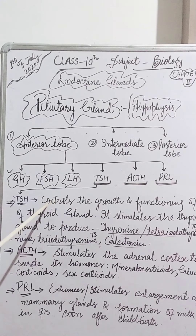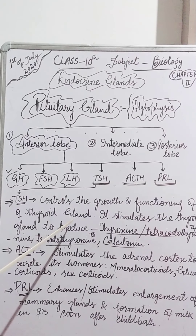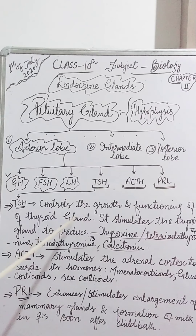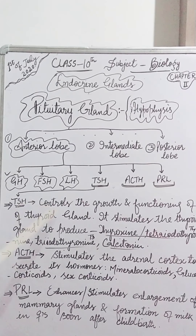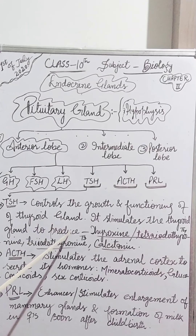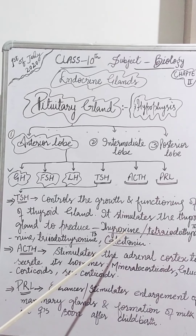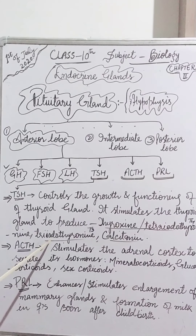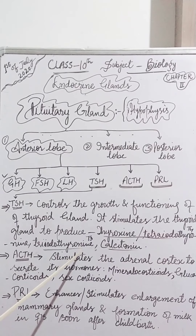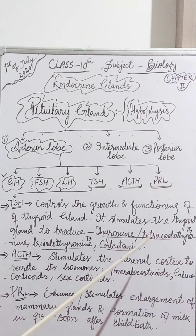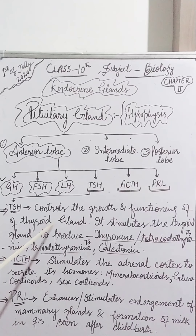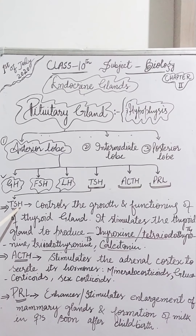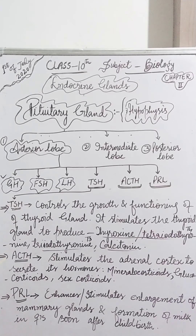TSH controls the growth and functioning of the thyroid gland, which is a very important gland. Thyroid stimulating hormone stimulates the thyroid gland to produce hormones: thyroxine, also called tetraiodothyronine or T4; triiodothyronine or T3; and calcitonin. The secretion of these three hormones is stimulated by thyroid stimulating hormone.